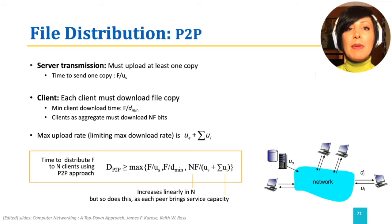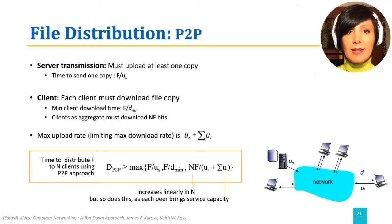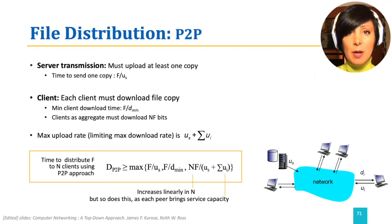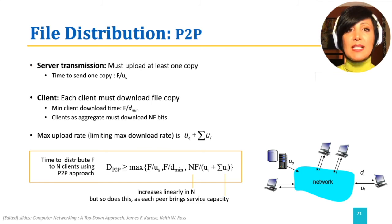Uploading one copy from the server will still be F divided by US. Each client I downloading a copy will still take F divided by DI. Clients will download N copies, so the total download size is still N times F. But they will also upload using their UI capacities. So the lower bound for the delay will be the maximum of: F divided by US (server upload time of one copy), F divided by D min (download time of the slowest client), and NF divided by the sum of US plus all UIs (upload time of N files using aggregate client and server capacities).